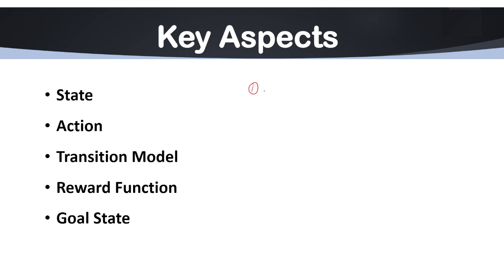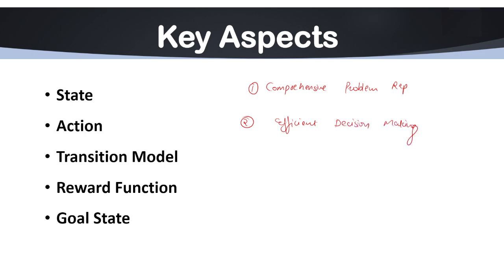The first reason is comprehensive problem representation. It allows AI to model all the possible situations an agent might encounter, making it possible to assess each potential scenario and understand how the environment evolves over time or through various actions. Another reason is its efficient decision-making power — it uses search algorithms like the A* algorithm for finding optimal solutions.